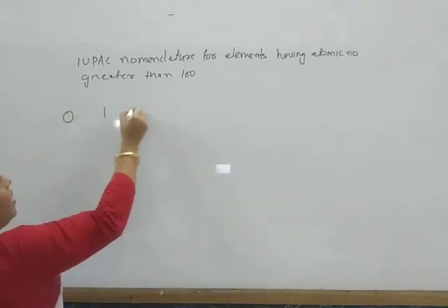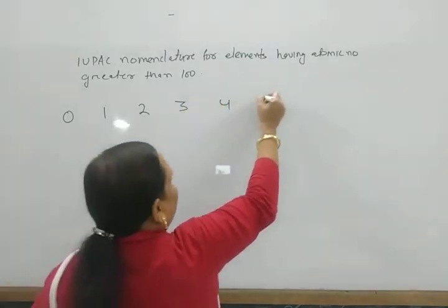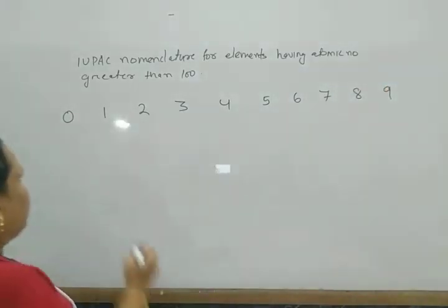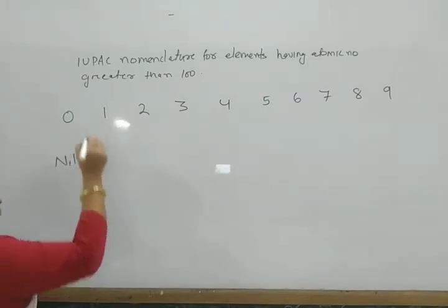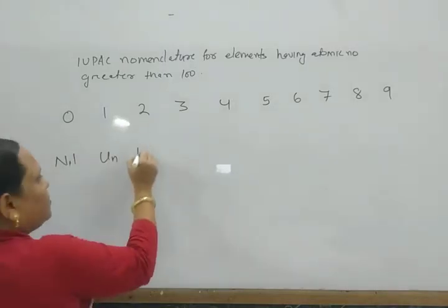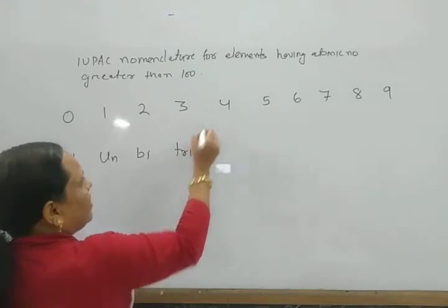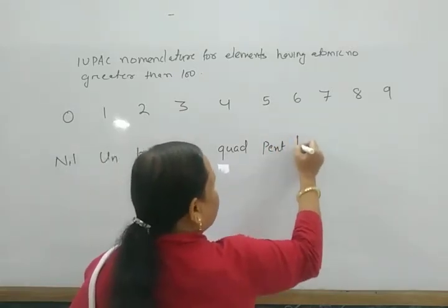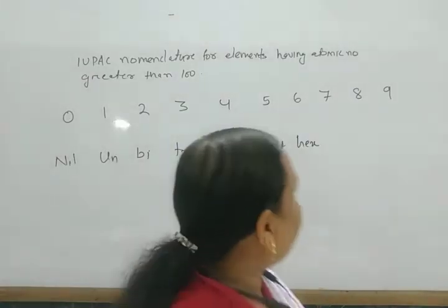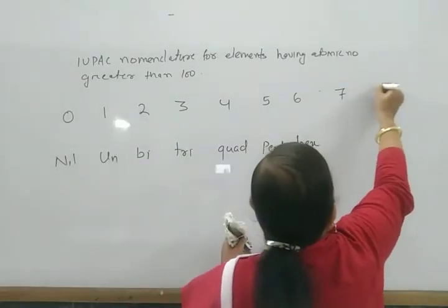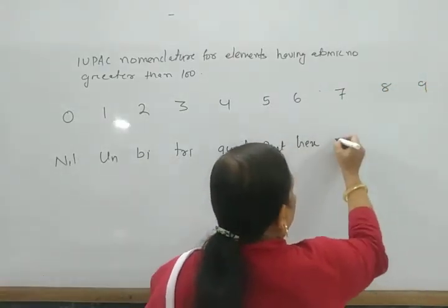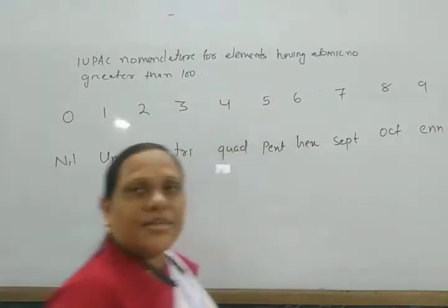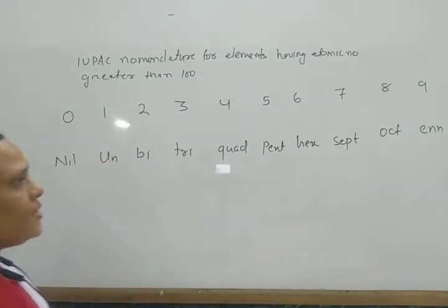The word roots for the digits are: 0 = nil, 1 = un, 2 = bi, 3 = tri, 4 = quad, 5 = pent, 6 = hex, 7 = sept, 8 = oct, 9 = enn. These are the different word roots used for writing IUPAC names.